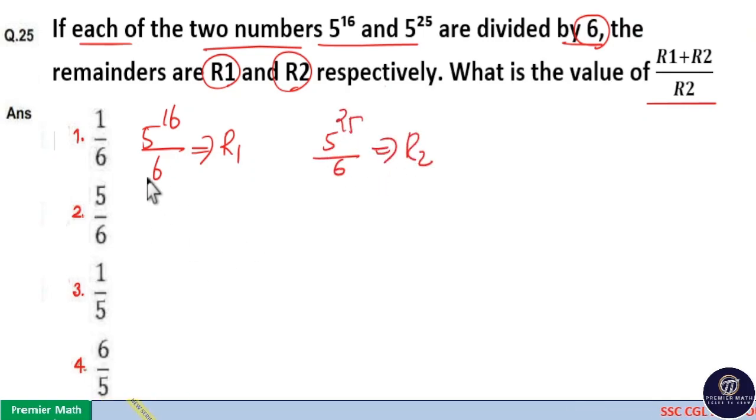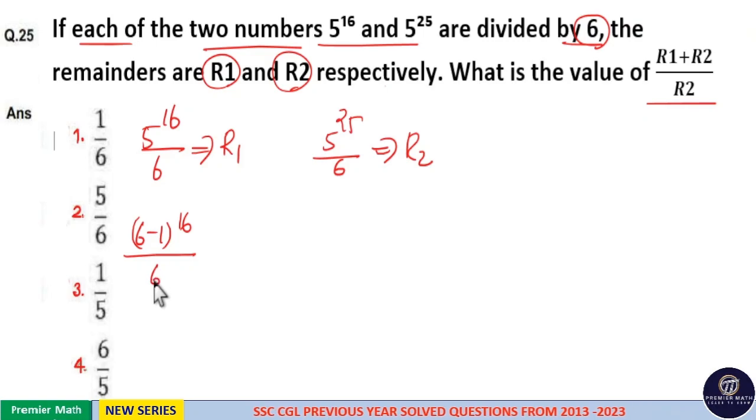Now this is 5 and this is 6. So I will write 5 as 6 minus 1. 6 minus 1 raised to 16 by 6. Now here you don't have to expand this. There is a short trick.